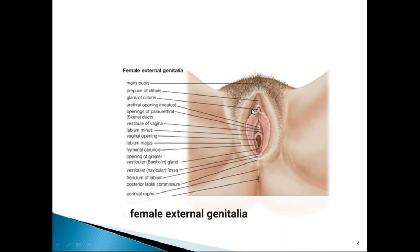Inside the major folds of labia majora, there are two minor folds called labia minora. Labia minora have an outer surface and an inner surface. Anteriorly both labia minora converge to form a prepuce above and a frenulum below the clitoris. Posteriorly both labia minora converge and form a fourchette.